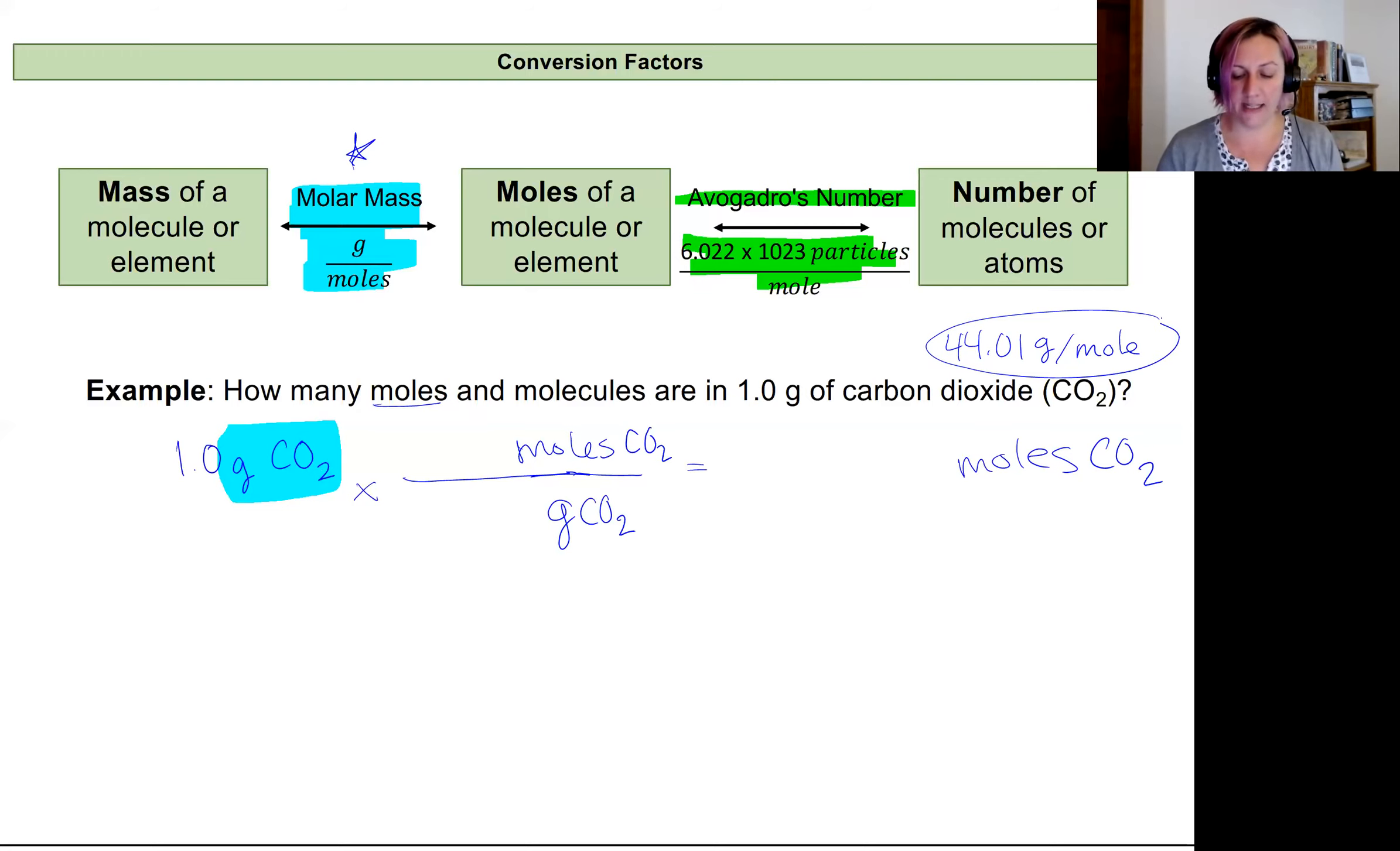So looking at that, sometimes it helps to write these as equalities, that it's 44.01 grams is equal to one mole CO2. So my 44.01 grams goes on the bottom of my conversion factor and my one mole of CO2 goes on the top. Plugging that into my calculator, I'm going to get a value that's 0.22. Oh, sorry, I missed a zero on that.